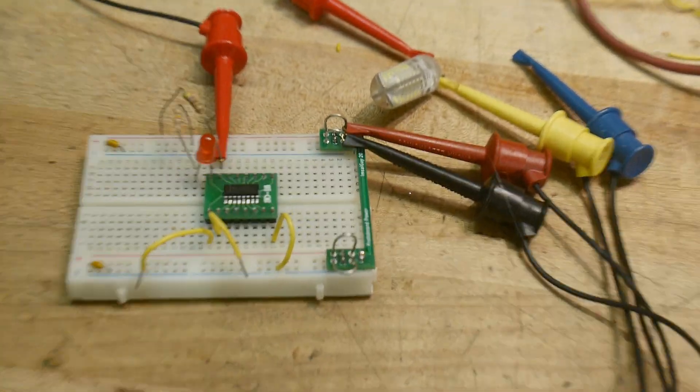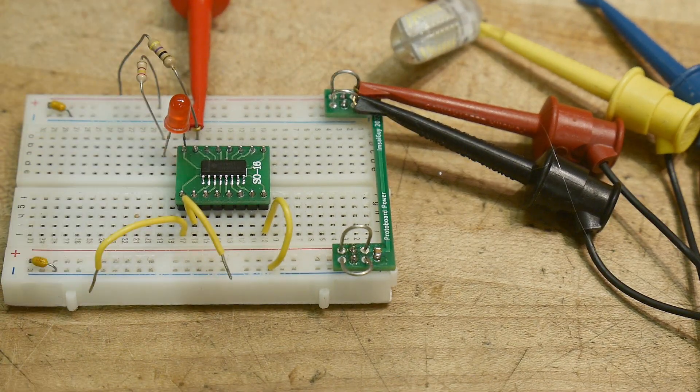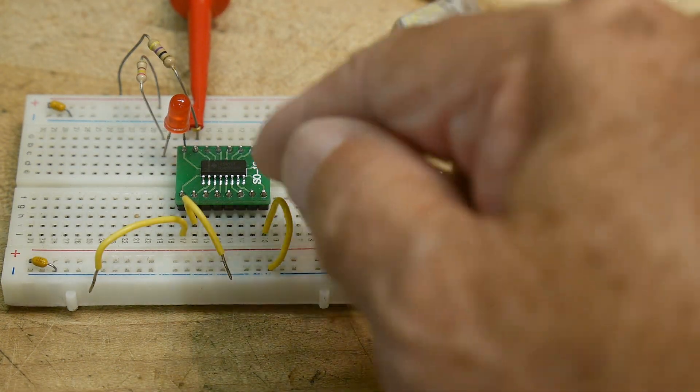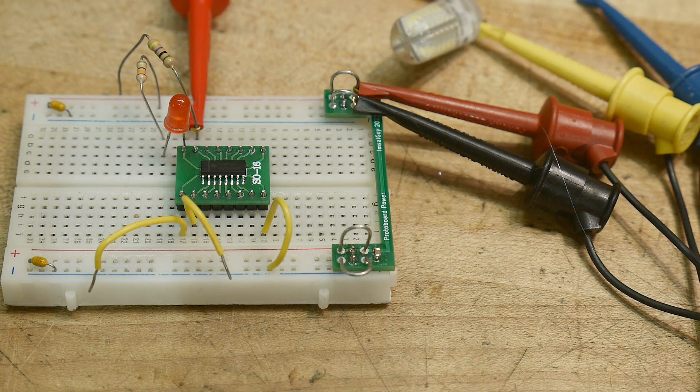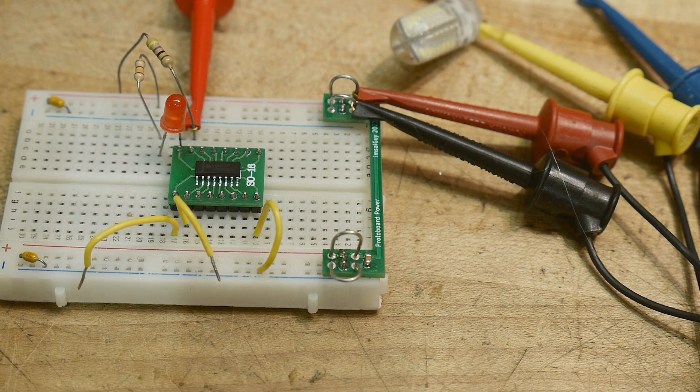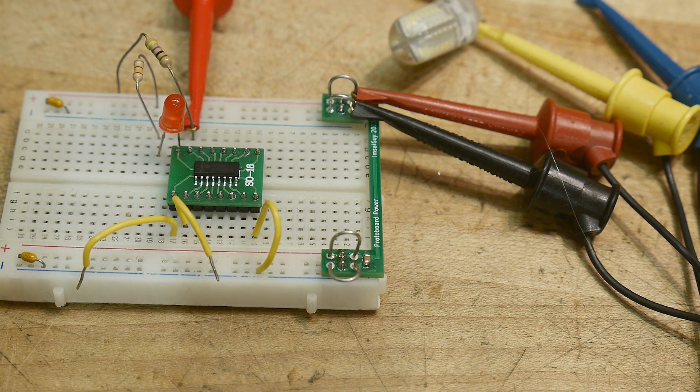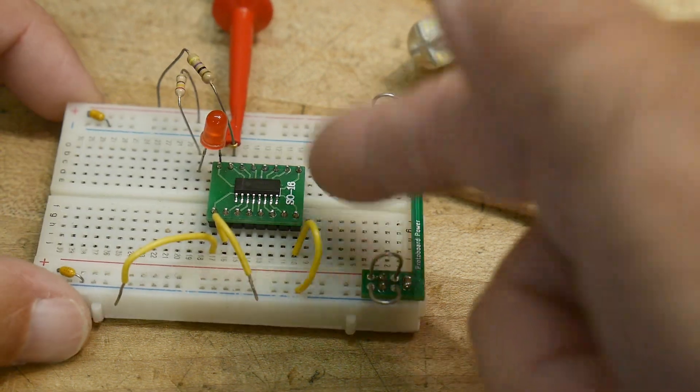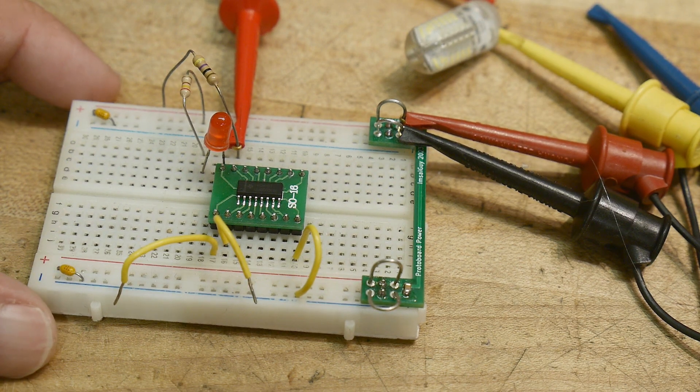All right. So the version that I have is a surface mount version. So I put it on a little adapter board so I can put it in my breadboard. And let's turn on some voltage here on my power supply. All right. So I have five volts coming into the part.